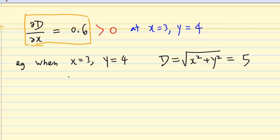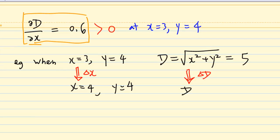And at this moment, when x increased by 1, so x equal to 4 and y is also 4, then we expect the value of D will be increased approximately by 0.6. That means D will be approximately 5 plus 0.6, about 5.6.